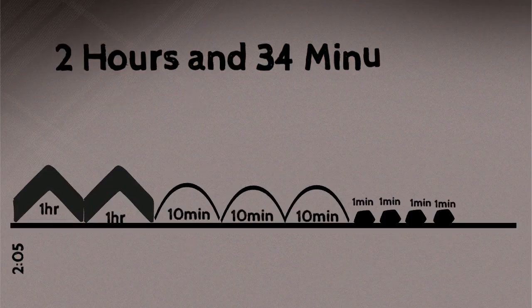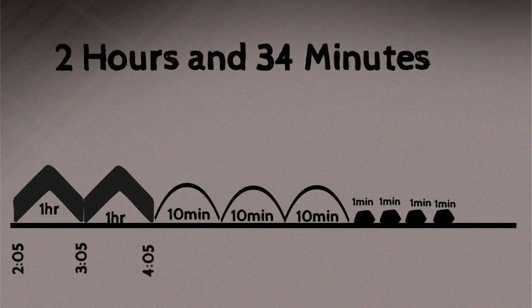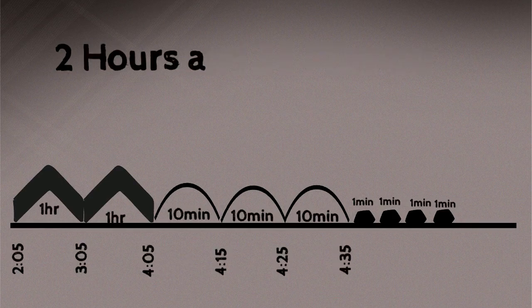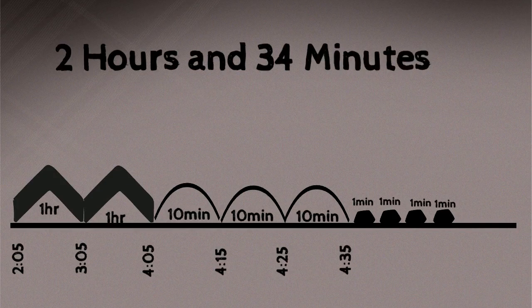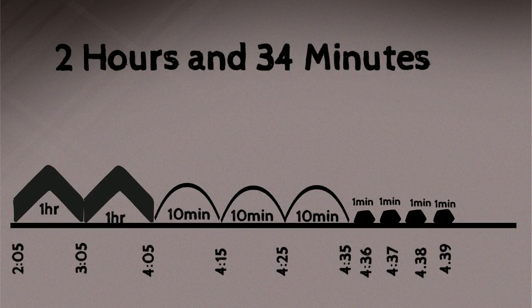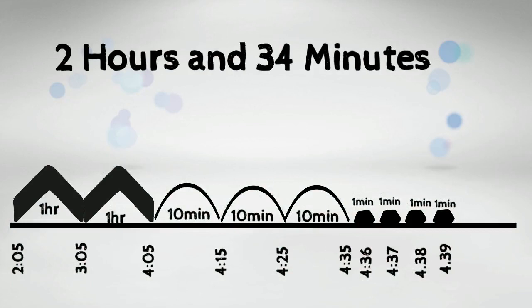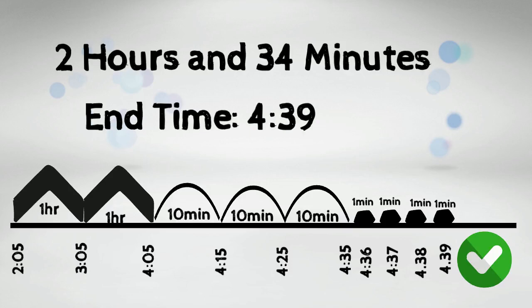Now I'll calculate each time. One hour past 2:05 is 3:05, one more hour past is 4:05. Ten minutes past is 4:15, another 10 minutes past is 4:25, and another 10 minutes past is 4:35. Then one minute past 4:35 is 4:36, one more is 4:37, one more is 4:38, and one last minute past is 4:39. So after using mountains, hills and rocks, our end time is 4:39.